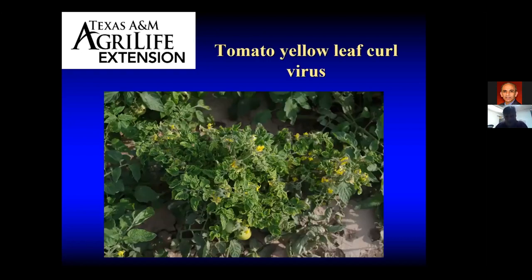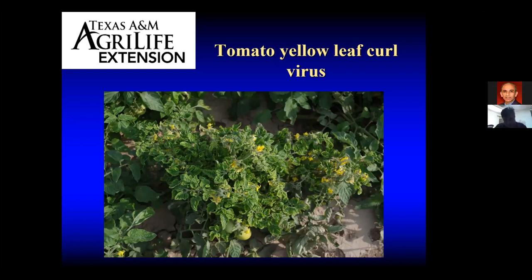I'll start off with probably what's the most devastating problem in our tomatoes in my part of the world. I'm the extension vegetable specialist for the southern tip of Texas, basically from south of Corpus, south of San Antonio, south of Del Rio, all the way down to Brownsville, Texas. The most devastating tomato problem we face in this area, and I'm sure to some degree y'all face it in East Texas, is that some transplants may originate from these places and may be bringing a problem to your home garden.